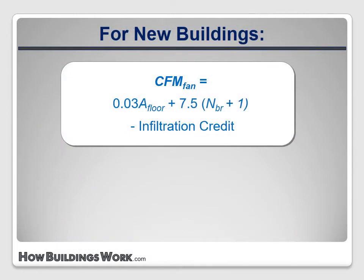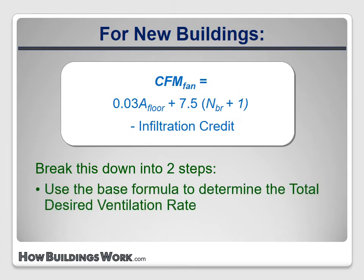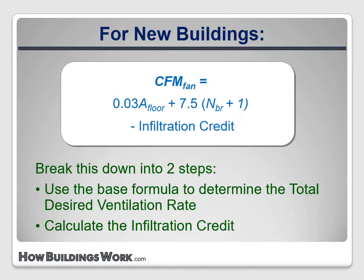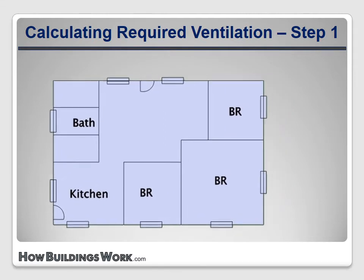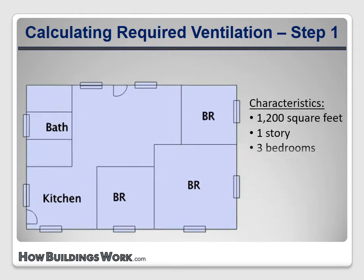Here's the formula. We can break it into two steps: first, we'll calculate the total desired ventilation rate using the base formula, and then we'll calculate the infiltration credit. Let's apply this to a sample house — a simple ranch with three bedrooms and about 1200 square feet of living space, being built in a new subdivision just outside of Trenton, New Jersey. It's a pretty tight house in the New Jersey Energy Star Homes program, so the blower door reading is just 850 CFM at 50 pascals.